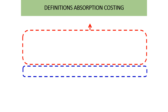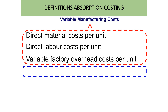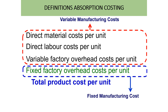The items included in absorption costing are: direct material cost per unit, direct labor cost per unit, and variable factory overhead cost per unit. These three items are also known as variable manufacturing costs, and they must be added to fixed factory overhead cost per unit, which is the fixed manufacturing cost. Together, these make up the total product cost per unit under absorption costing.